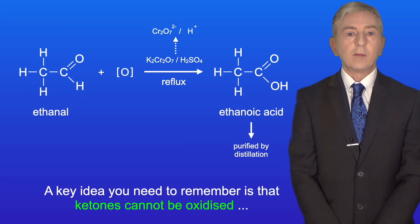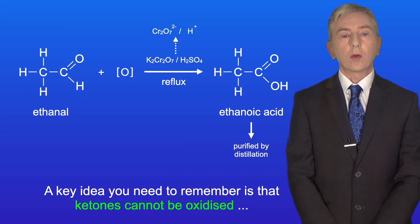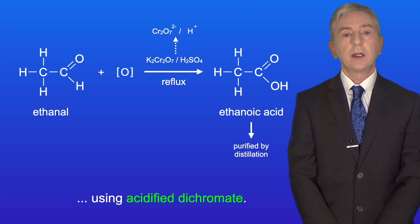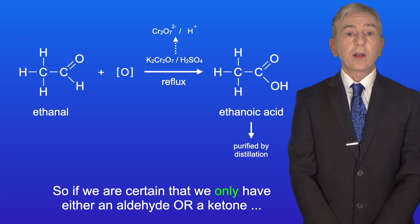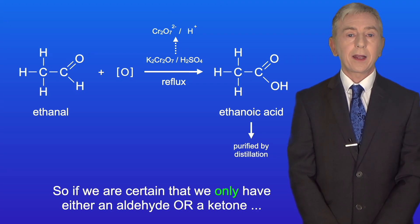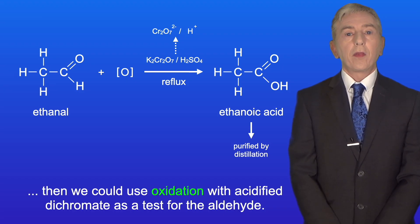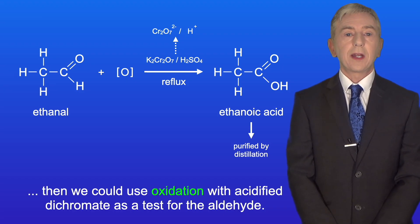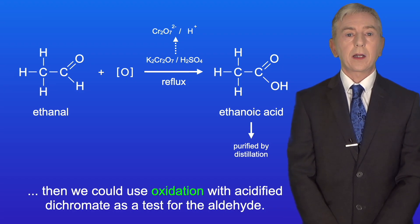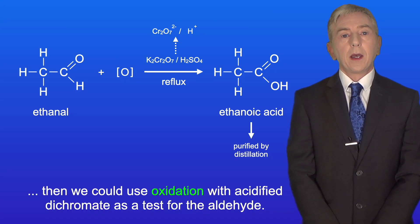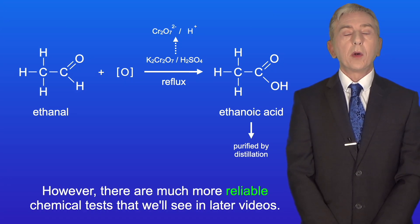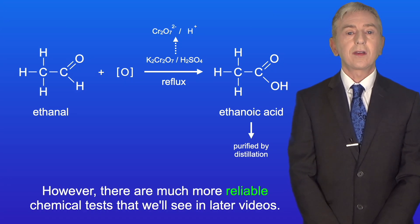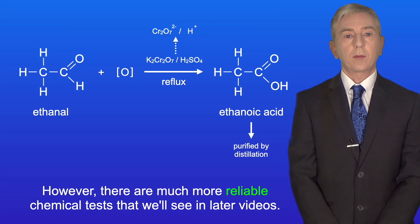A key idea to remember is that ketones cannot be oxidized using acidified dichromate. So if we're certain that we only have either an aldehyde or a ketone, we could use oxidation with acidified dichromate as a test for the aldehyde. However, there are much more reliable chemical tests that we'll see in later videos.